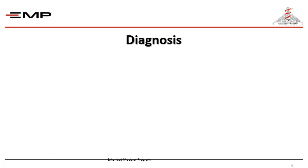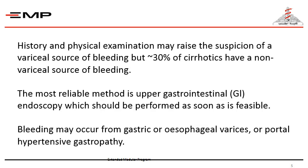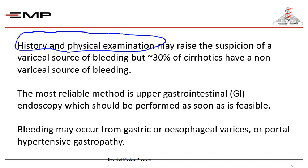How to diagnose? Of course, we should start with history taking and physical examination — the most important milestones in formulating a diagnosis. History taking and physical examination may raise the suspicion of a variceal source of bleeding, but in 30% of cirrhotics there are other sources other than variceal bleeding. The most reliable method to diagnose upper gastrointestinal bleeding is, of course, upper gastrointestinal endoscopy.